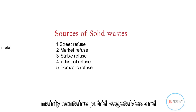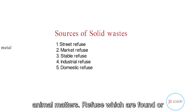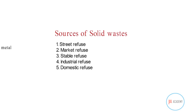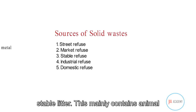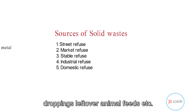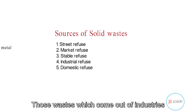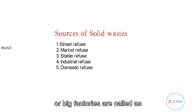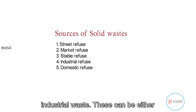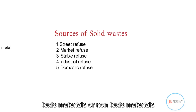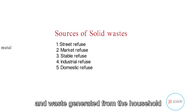Market waste is found mainly in market areas and contains putrid vegetables and animal matter. Refuse collected from stables is known as stable litter, which mainly contains animal droppings and leftover animal feeds. Waste coming out of industries or big factories is called industrial waste, which can be either toxic or non-toxic materials.